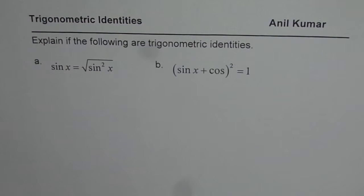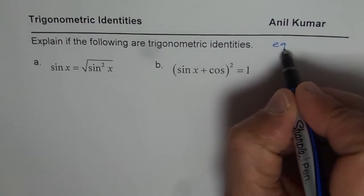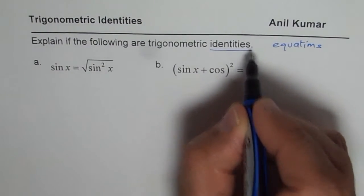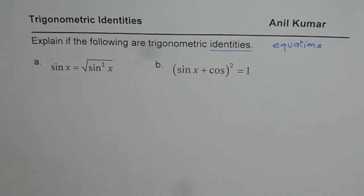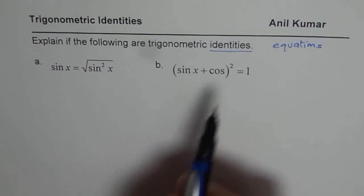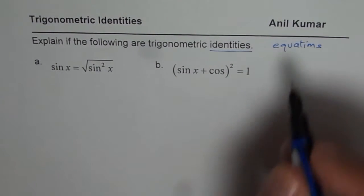I've purposely taken this question since it explains us two concepts. One, what are trigonometric equations and what are trigonometric identities. With the help of this question, we'll understand that also, the differences between the two. As you can see, both of them have equal to signs and trigonometric ratios, so both of them are trigonometric equations.